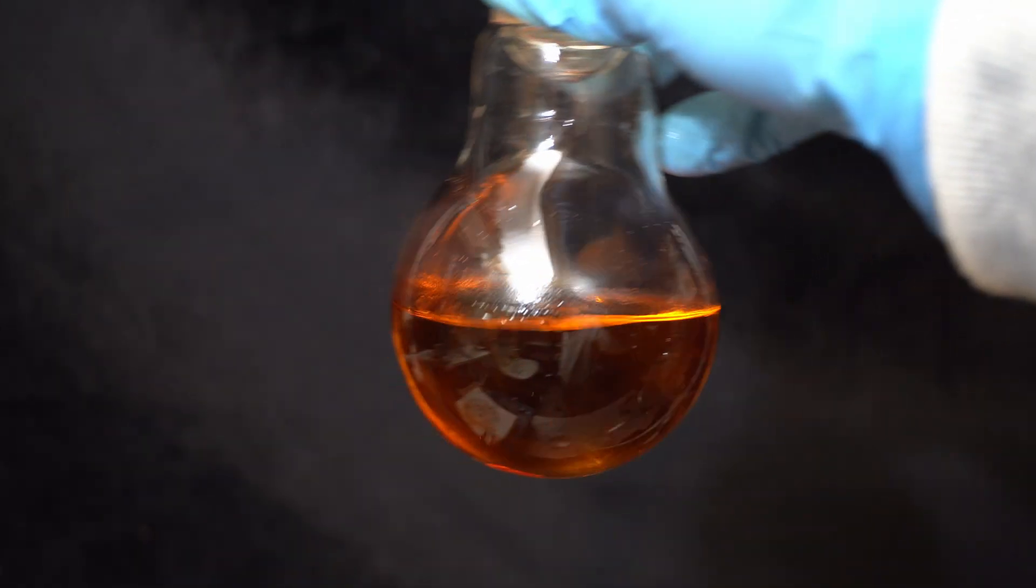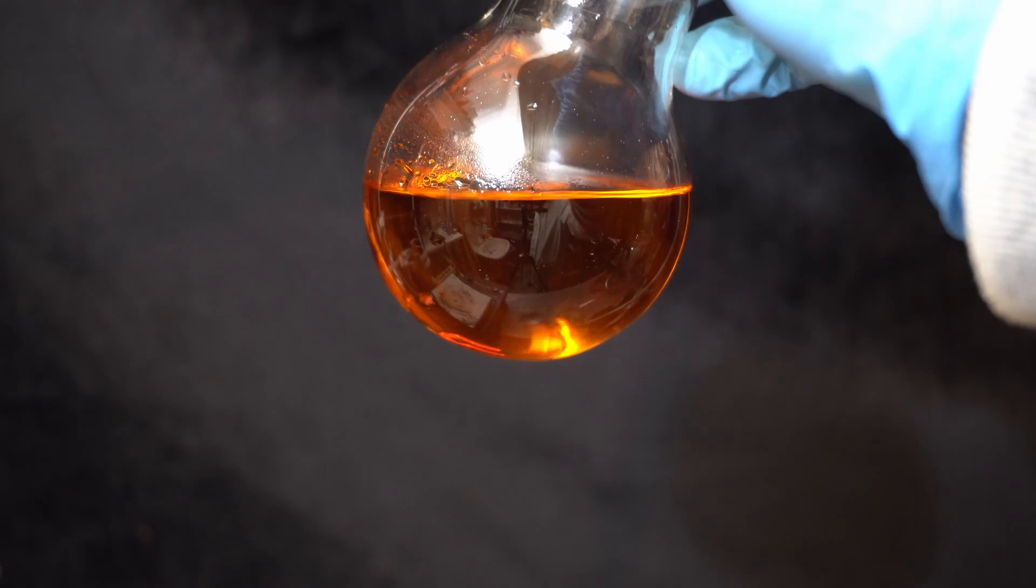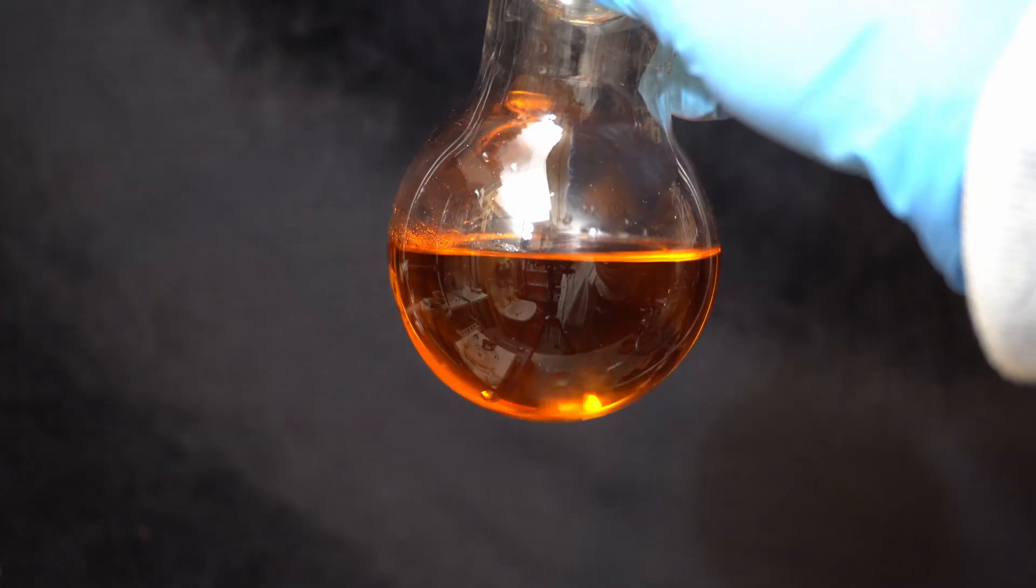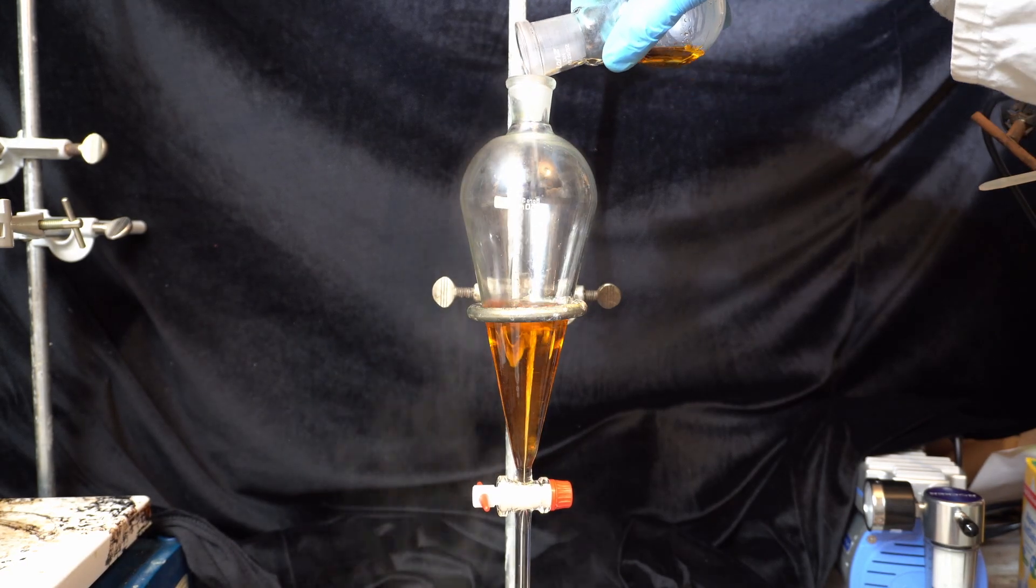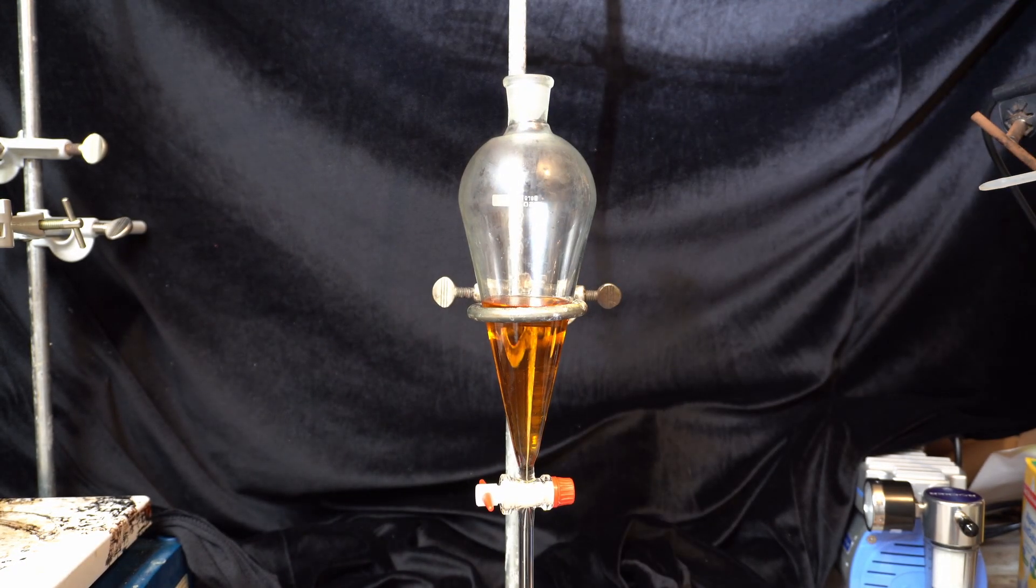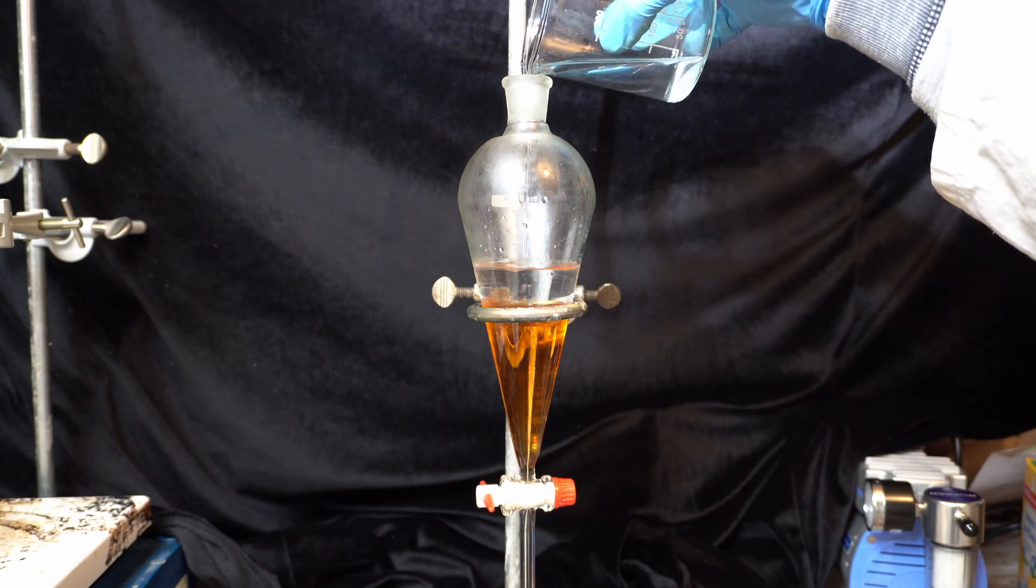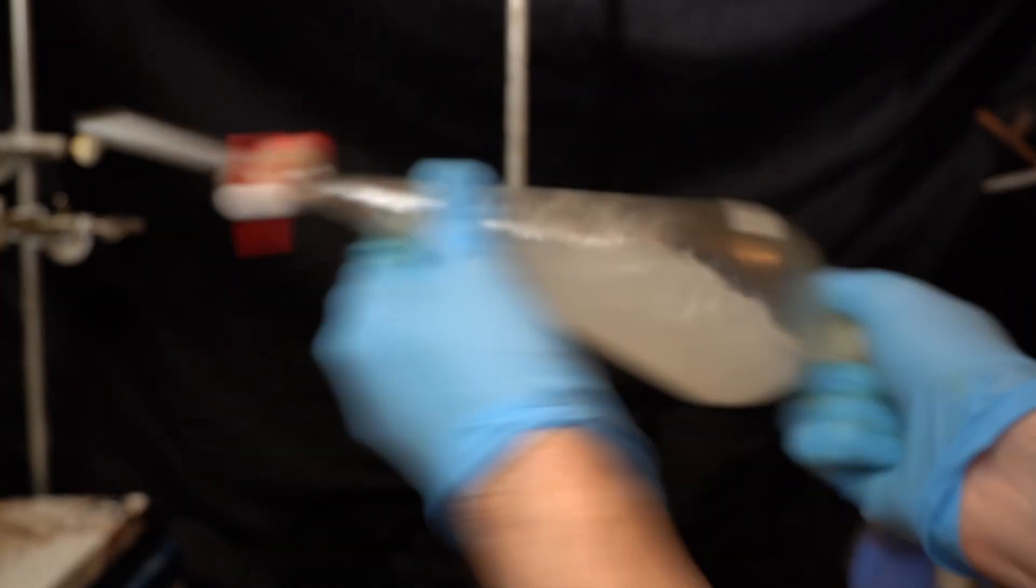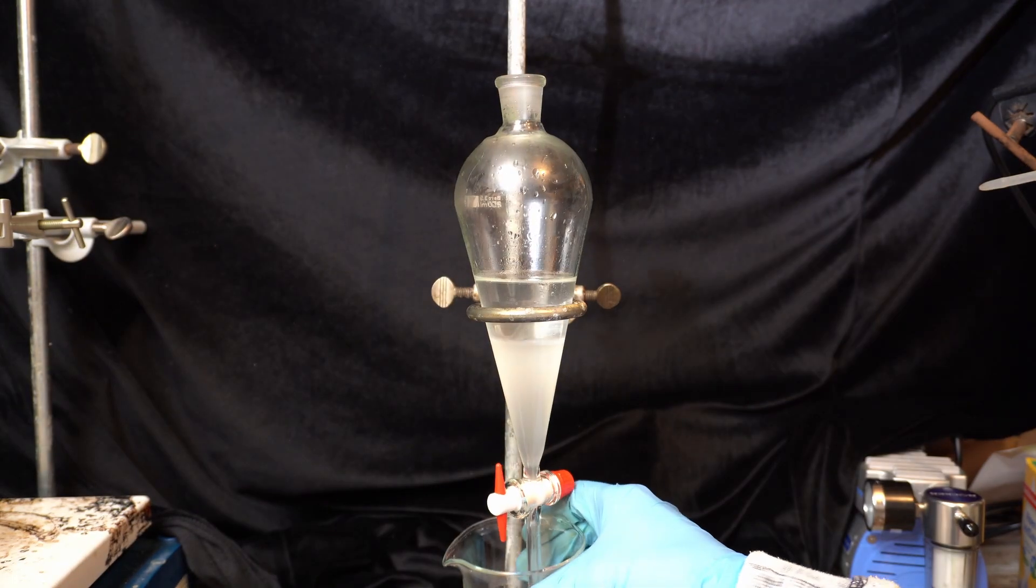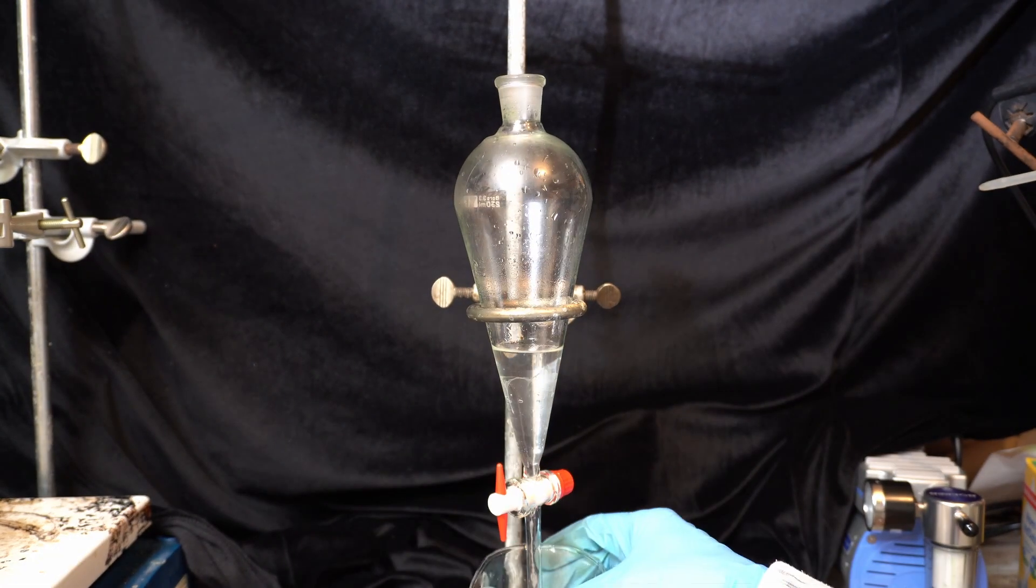The distillate itself has a pretty strong brown color, which is due to some elemental iodine dissolved in it. So, the product is cleaned with a small workup by washing it twice with saturated sodium chloride solution, which has a small amount of sodium thiosulfate dissolved in it. This will reduce any iodine and pull it into the aqueous phase.